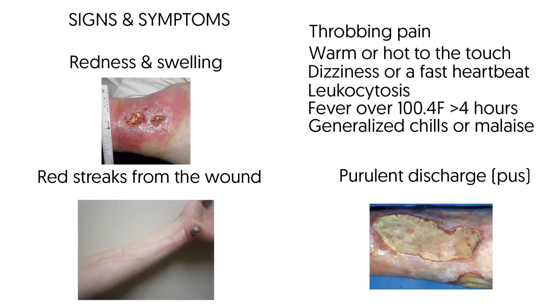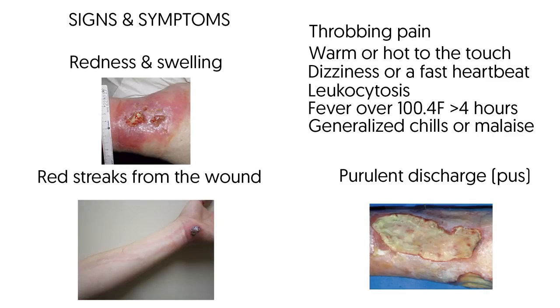Signs and symptoms of infection include redness and swelling. This should diminish over time during the initial phases of wound healing. If it does not decrease and red streaks are seen in the skin around the wound or progressing away from the wound, an infection is likely present. Throbbing pain or tenderness in the wound area — pain should gradually subside as the body heals, and a sudden or increased pain may be a sign of infection.